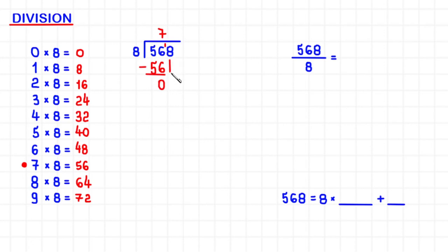After a subtraction, I bring down the next digit, which is 8. And then I ask the question, what number from 0 to 9 do I multiply by 8 to get 8 or almost 8, but not more?